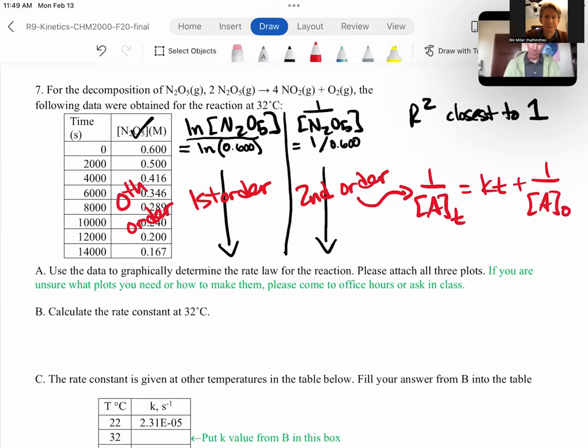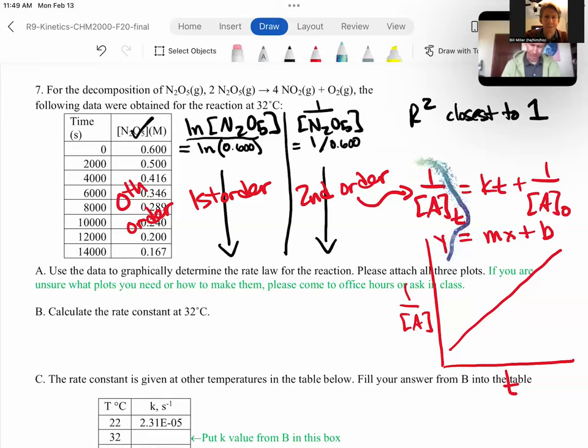And so what this means for this one is if you plot 1 over concentration of A versus time, you will get a straight line. And because this is what's called a linearization, so we are plotting the data in a way so that it can be a straight line, and what we're doing here is we are plotting as our Y value 1 over concentration. So that's our Y. And then we're plotting X on our X-axis time. And if we do that and we get a straight line, then that means that, first off, it is second order.